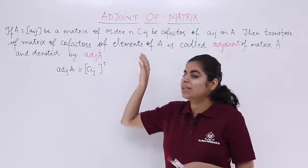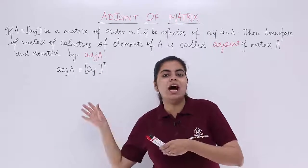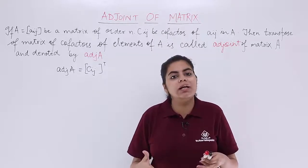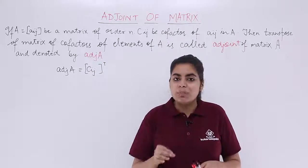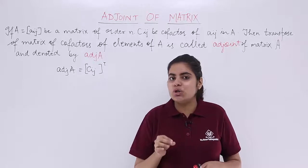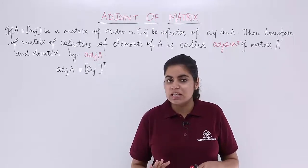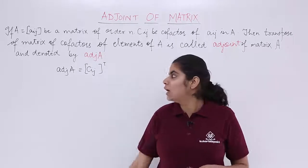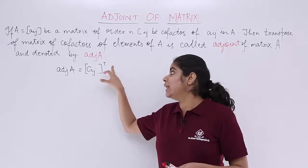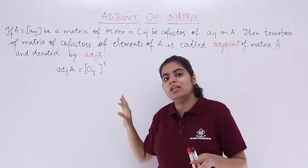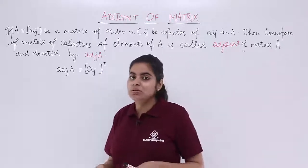We will be reading the definition after we understand how to calculate it with the help of some numerical examples. Basically, adjoint of a matrix is this: you calculate the cofactors and then take the transpose, and then you get the adjoint of that matrix.